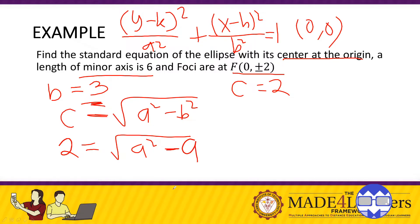Okay, so getting the square of both sides. So we have 4 equals A squared minus 9. So this is 9. And using the properties of equality, so going to the left. So 4 plus 9 would be 13. Okay, so we have A squared equals 13, getting the square root. So we have A equals square root of 13.